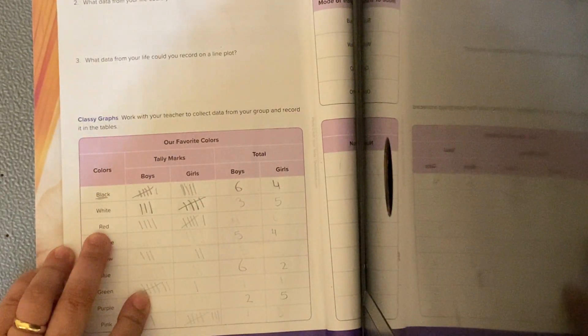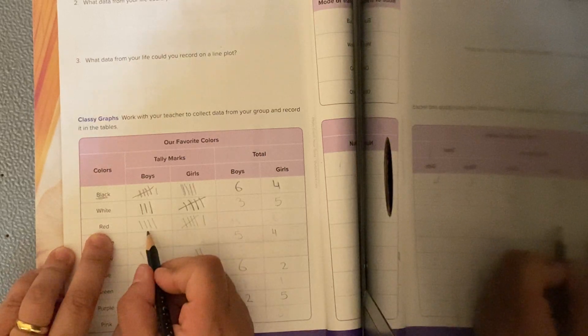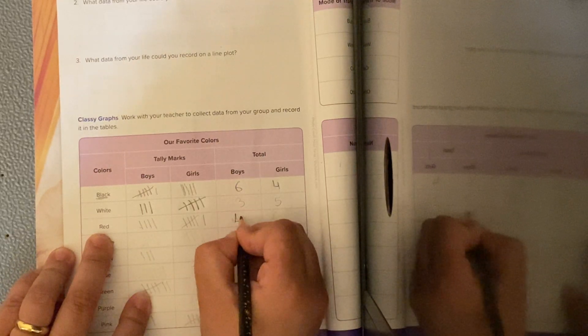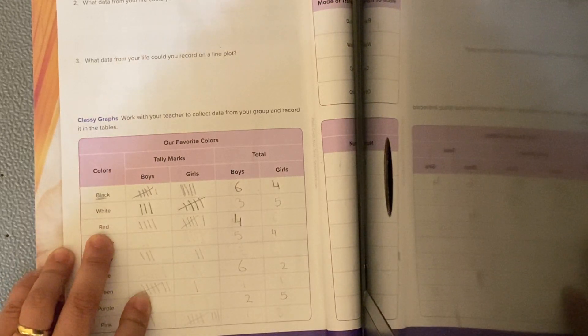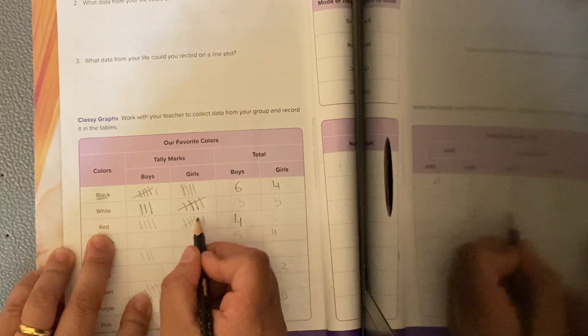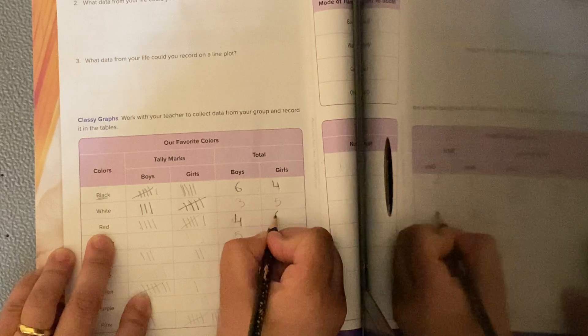Number the red color. How many boys like red color? 1, 2, 3, 4. So I am going to write total is 4 for the boys. For the girls, they are 5 and 1, which means 6, equals 6.